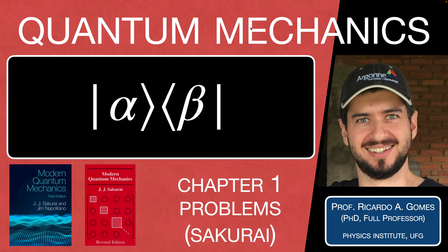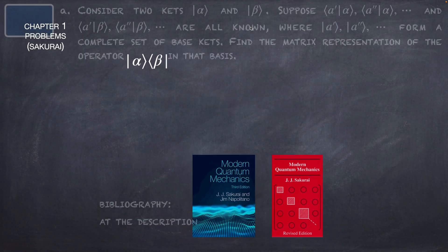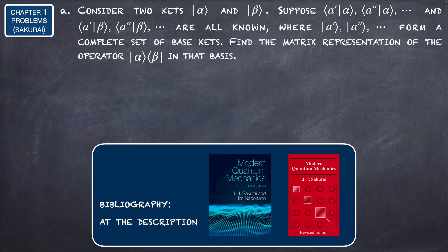Hello everyone, I'm Professor Ricardo. In this video we are going to solve a quantum mechanics problem. Consider two kets alpha and beta, and suppose alpha a-prime, alpha a-two-prime, and so on, and beta a-prime, beta a-two-prime, and so on are all known, where a-prime, a-two-prime form a complete set of basis kets. Find the matrix representation of the operator |alpha⟩⟨beta| in that basis.